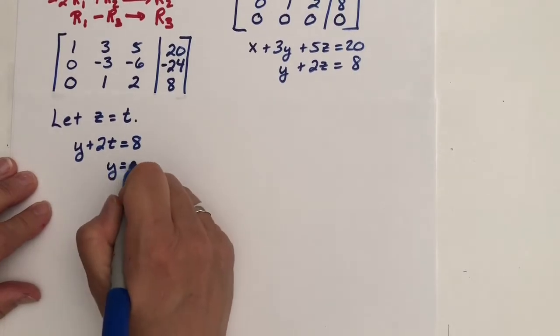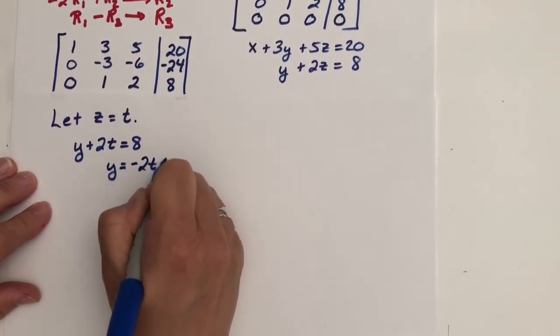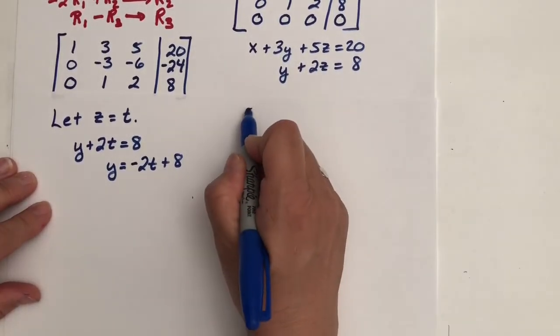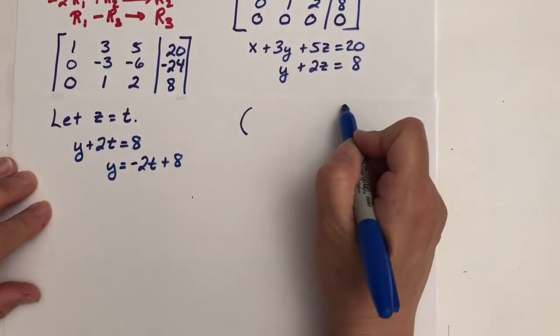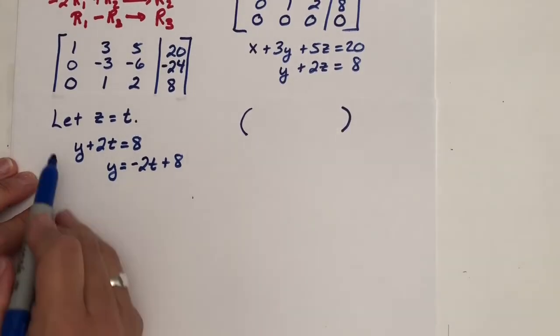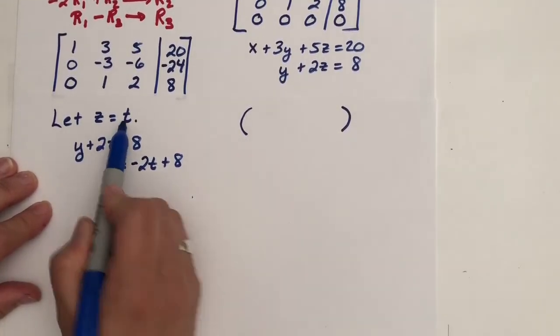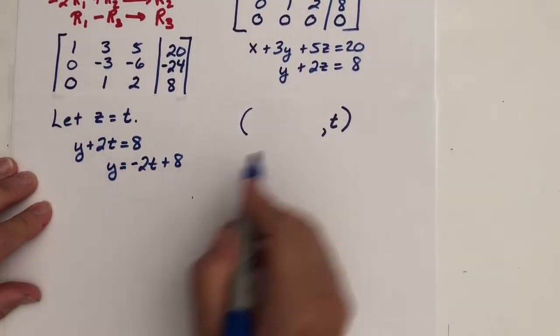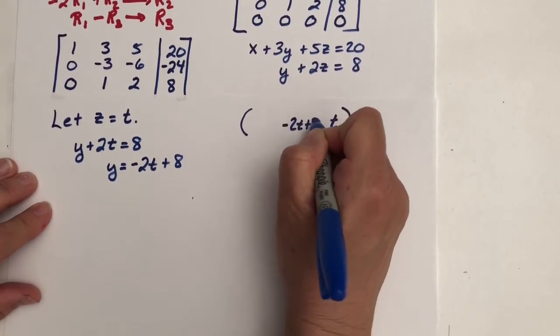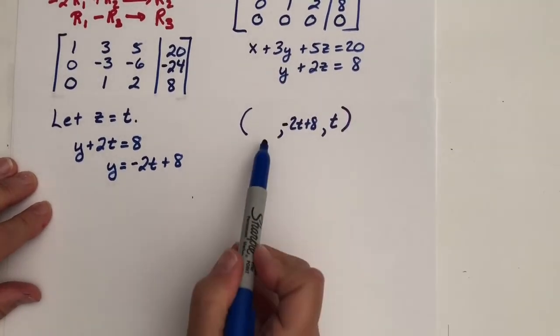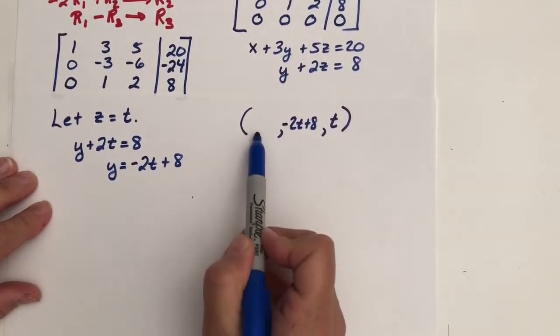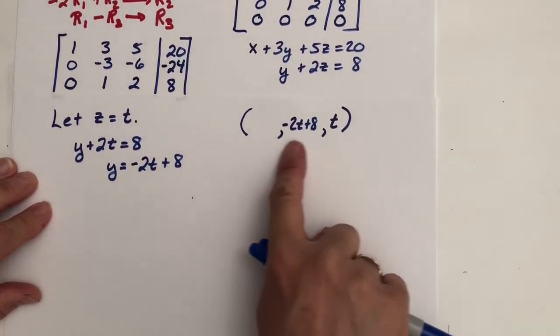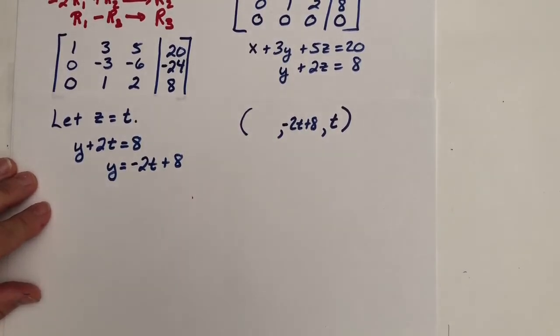So I'm going to grab another piece of paper so we can do this and make it be something that we can see. So we'll let z equal t. So there's my parameter. I'm going to substitute t in for z. So we have y plus 2t equals 8. So when I solve for y, I have y equals negative 2t plus 8 or 8 minus 2t.